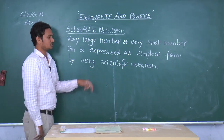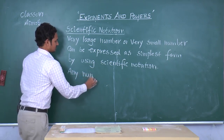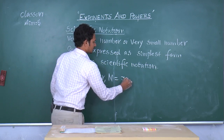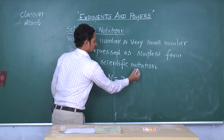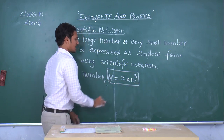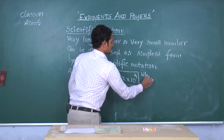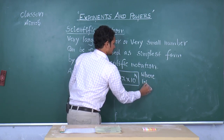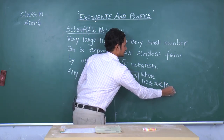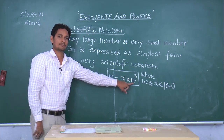Here, while writing scientific notation, any number n can be expressed as a product of a number and a power of 10. Every number can be expressed as a product of a number and a power of 10.